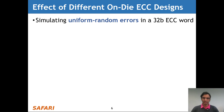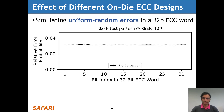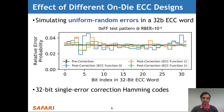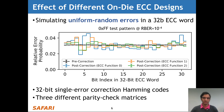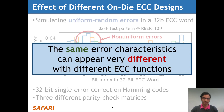Let's take a look at the effect of using different on-die ECC designs. In this experiment, we simulate uniform random errors within a single 32-bit ECC word. The x-axis shows the bit index in the 32-bit ECC word, and the y-axis shows the relative probability of observing an error in each of the different bit positions. Because we simulate uniform random errors, the per-bit error probabilities are roughly equal for each bit position. However, the post-correction errors look quite different. We show three different 32-bit Hamming codes, each using a different parity check matrix, and the post-correction errors are highly non-uniform and depend on the particular ECC function used.